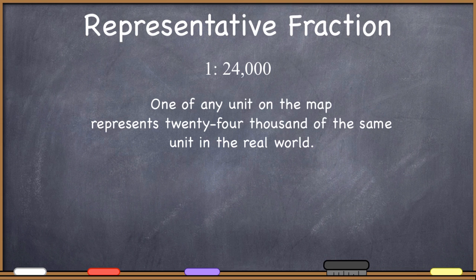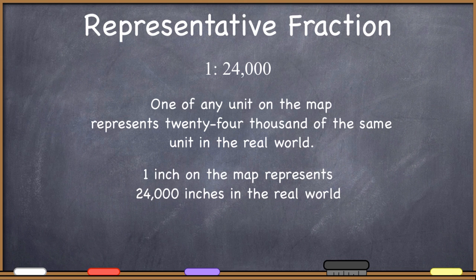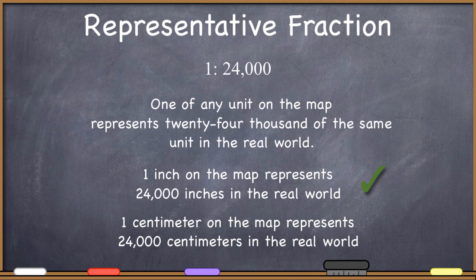This is a very valuable reason to communicate scale in this way because it is unitless. The person using this scale can choose what system of measurement and unit they would like to use. So 1 inch on the map represents 24,000 inches in the real world. It is also true that 1 centimeter on the map represents 24,000 centimeters in the real world. As long as I put the same unit on both sides of the representative fraction, I'm good. Both of these are true statements about the scale because of the representative fraction of 1 to 24,000.